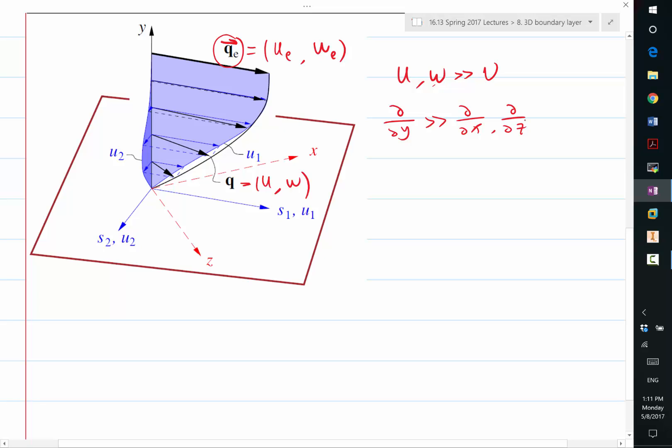So any variation that you can find when you move along the surface is much, much less than the variation you can find when you go away from the wall.